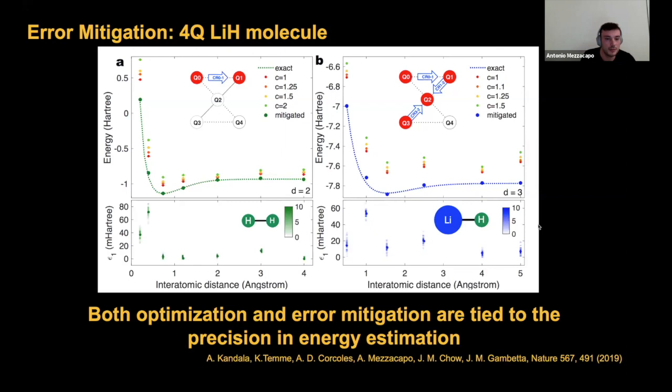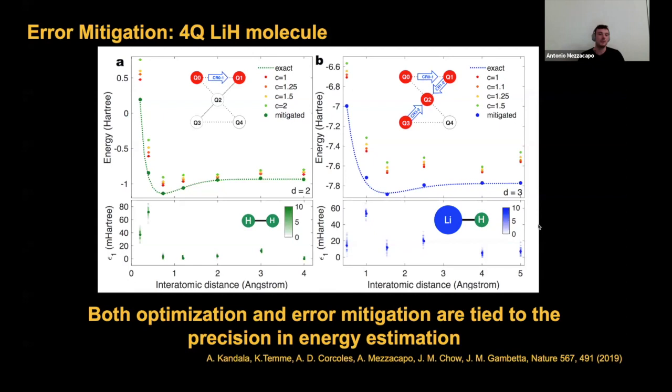One problem with that is that the precision with which we retrieve those estimations is really important. If you try to perform a linear fit or extrapolate something that has stochastic fluctuations on top of it, you realize that the performance of that extrapolation is going to be tied to how much stochastic noise you have in those points.